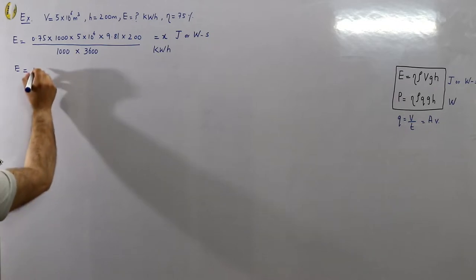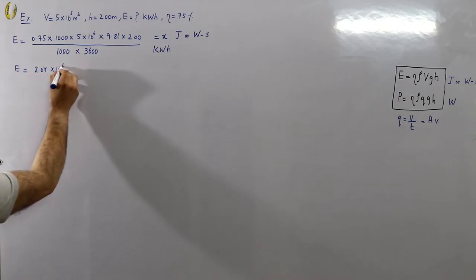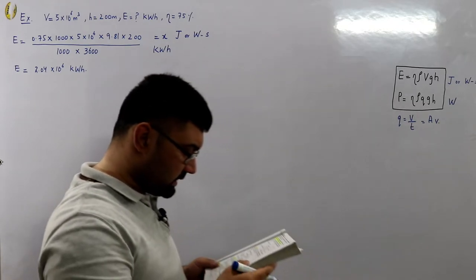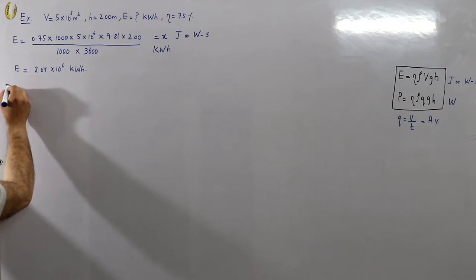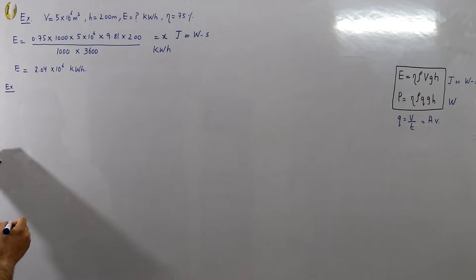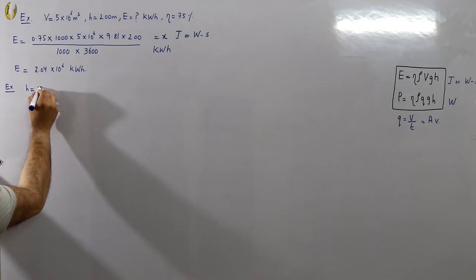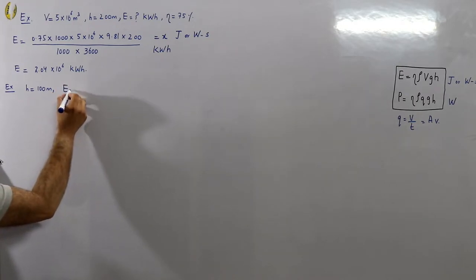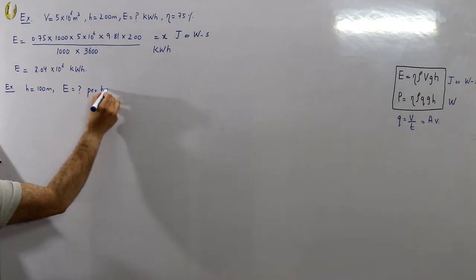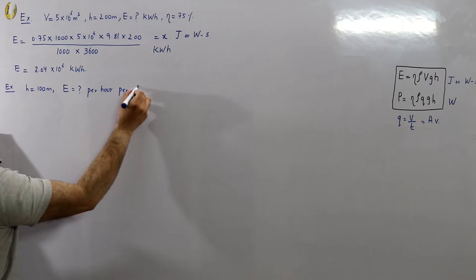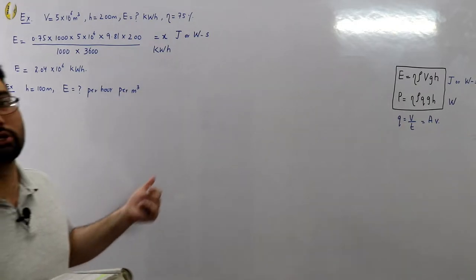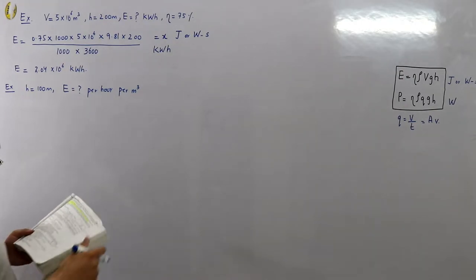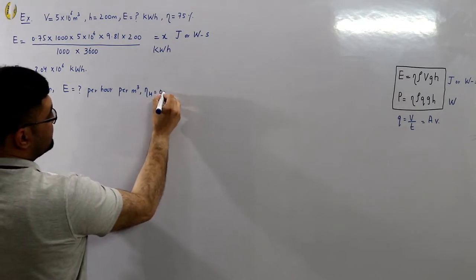That comes out to 2.04×10⁶ kilowatt-hours — the number of electrical units generated. Next example: water for a hydroelectric station is obtained from a reservoir with a head of 100 meters. Calculate the electrical energy generated per hour per cubic meter. The hydraulic efficiency is given as 0.86.